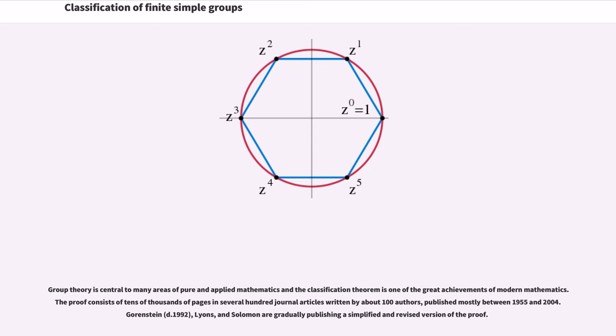Group theory is central to many areas of pure and applied mathematics and the classification theorem is one of the great achievements of modern mathematics. The proof consists of tens of thousands of pages in several hundred journal articles written by about 100 authors, published mostly between 1955 and 2004.